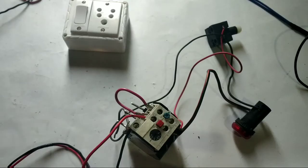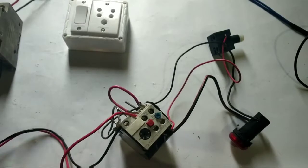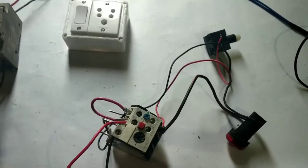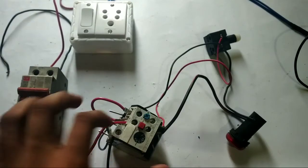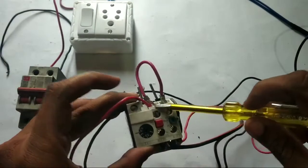So friends, we will see how we wire the overload. First we are in the MCB. The RN is the phase, the RN is terminal 96, 95.